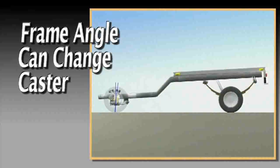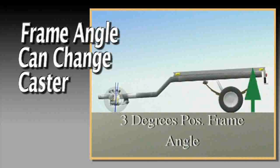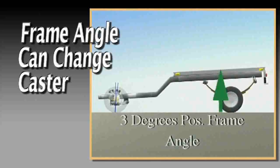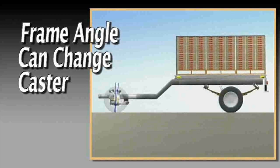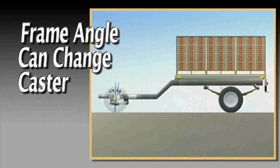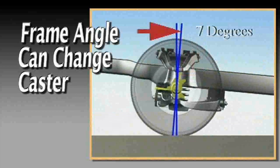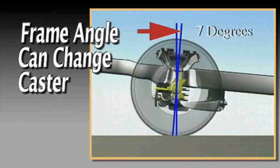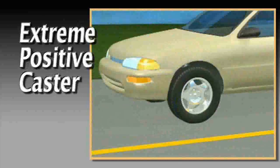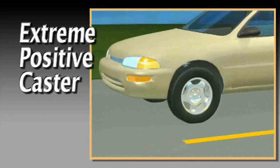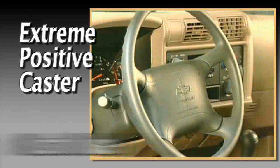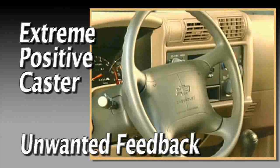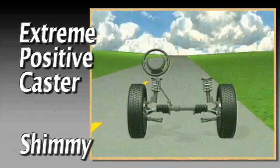For instance, if an empty vehicle has three degrees positive frame angle and four degrees caster, when the frame angle moves to zero, caster may shift to seven degrees. This might create problems on the road. Extreme positive caster may cause a harsh ride, unwanted feedback at the steering wheel, or shimmy.